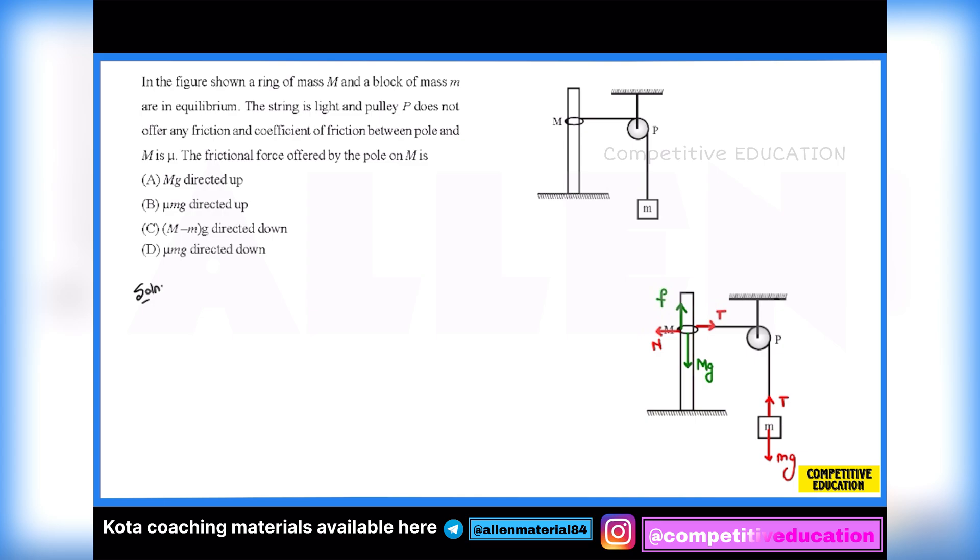As this ring is not moving in the vertical direction, I can balance forces in the vertical direction for this ring. So I can write friction force equals capital M times G, and this friction force is acting in the upward direction. So my correct answer is A. A is my correct answer to this problem.